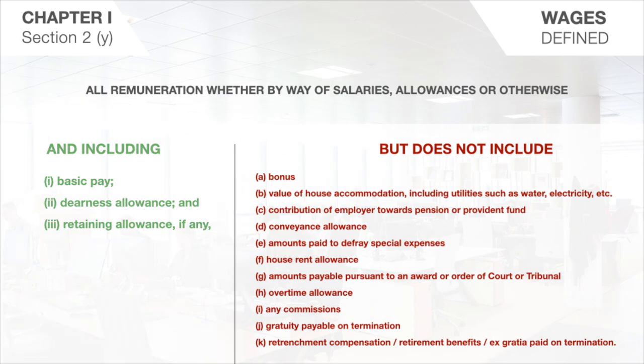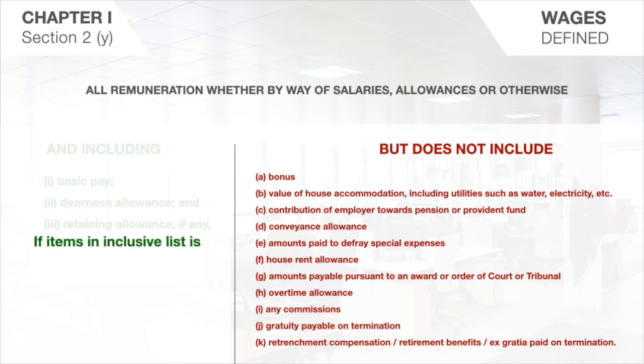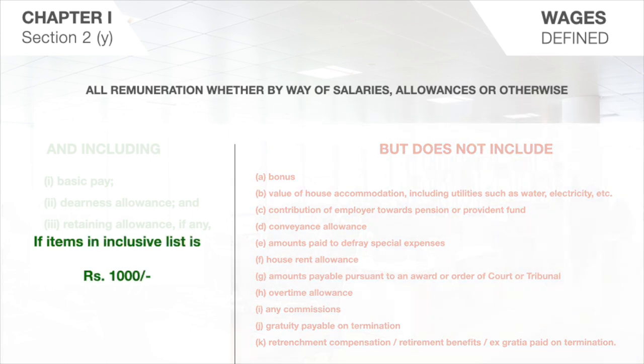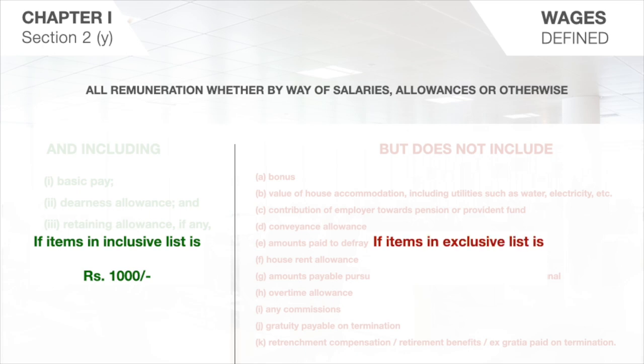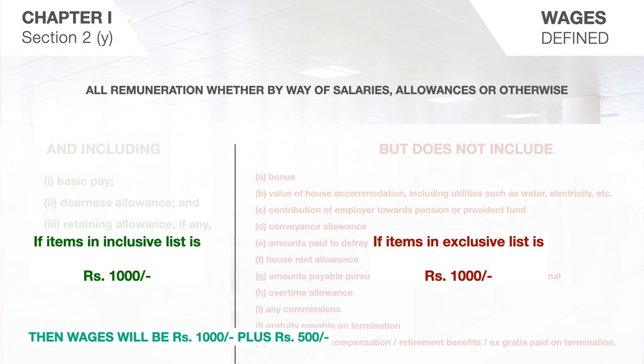However, if under the exclusion list — barring the items payable on termination — the amount exceeds 50% of the wages, or such other percentage as may be set by the central government, then the amount so exceeding 50% or the other percentage shall be deemed to be part of the remuneration and accordingly added into the term wages.